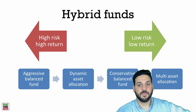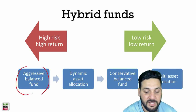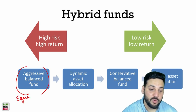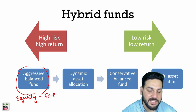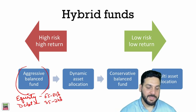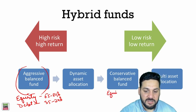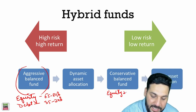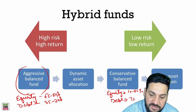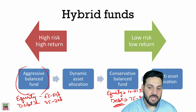Hybrid funds are a combination of equity and debt. Aggressive balanced funds are the riskiest hybrid funds — equity investment is 65–80% and debt is 20–35%. The higher equity allocation makes them more risky. Conservative balanced funds, on the other hand, invest only 10–25% in equity and 75–90% in debt, resulting in lower returns and lower risk.